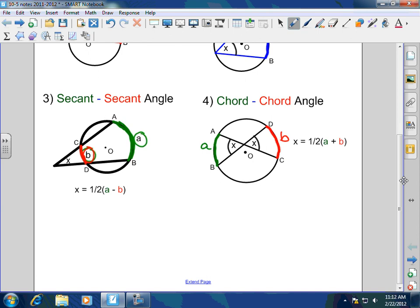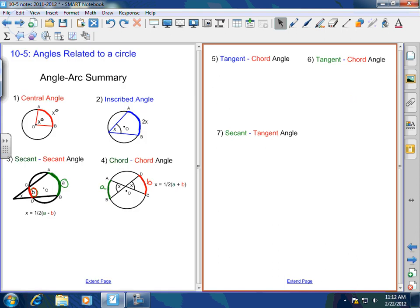And again, just because this is X degrees does not mean that B is X degrees. That only works for central angles. So in order to find X here, X equals one-half of A plus B. I'm going to split-screen it just in case.